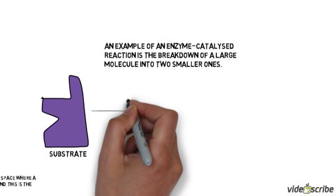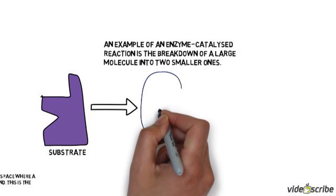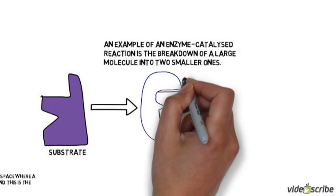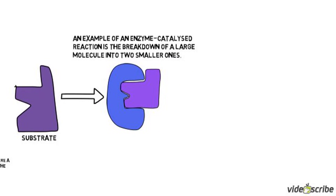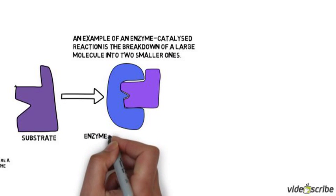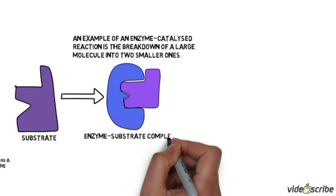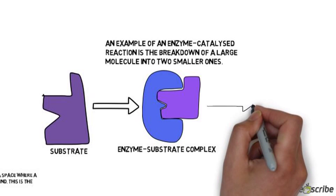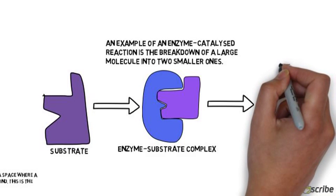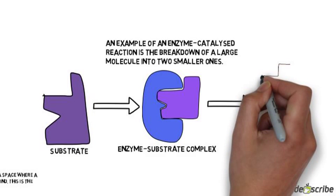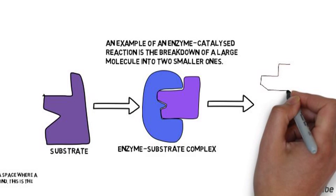The substrate floats around inside the cell, or outside the cell in the case of digestion, and collides with an enzyme. When it collides with the enzyme and fits into the active site, it forms an enzyme-substrate complex. When this is bound, the reaction happens. In this case, the enzyme-substrate complex causes the substrate to be broken down into two smaller molecules, which will be the products.